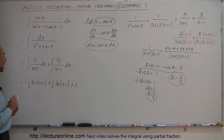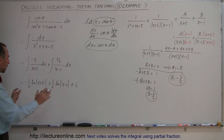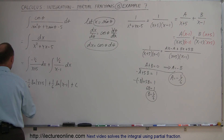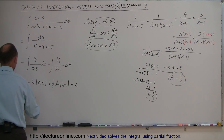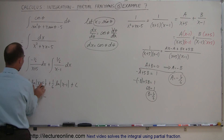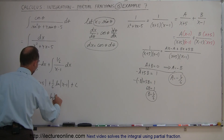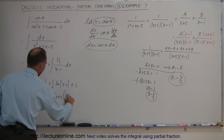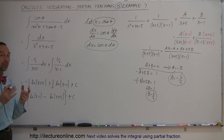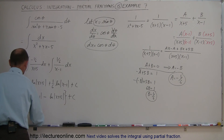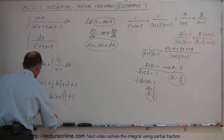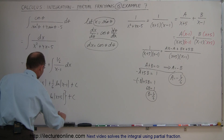We can factor out 1/6 and rearrange: this equals 1/6 times the natural log of (x − 1) minus the natural log of (x + 5), plus C. Using log properties, the difference of two logarithms can be written as a single logarithm, so this simplifies to 1/6 times the natural log of (x − 1) over (x + 5), plus C.